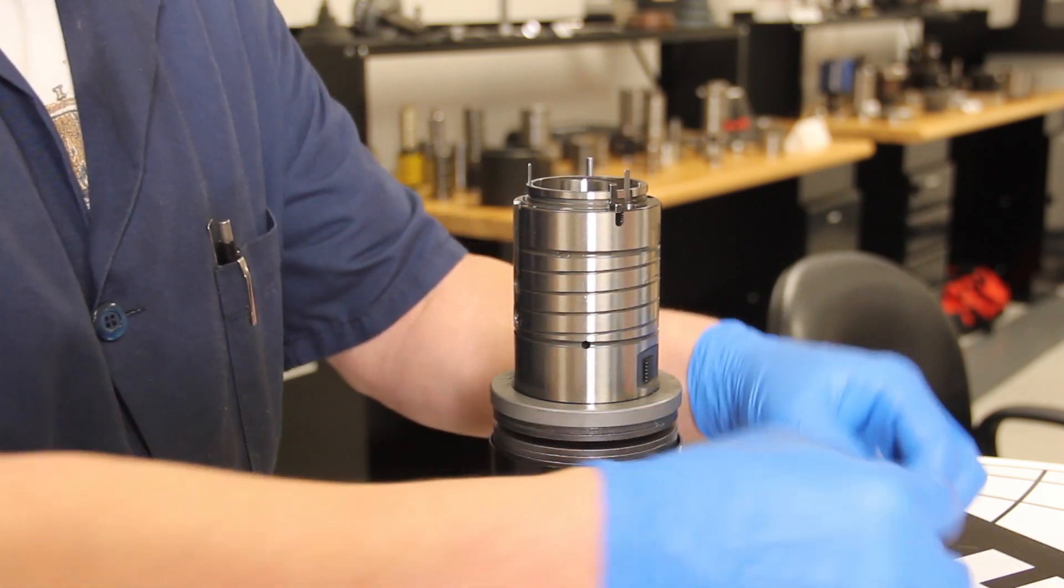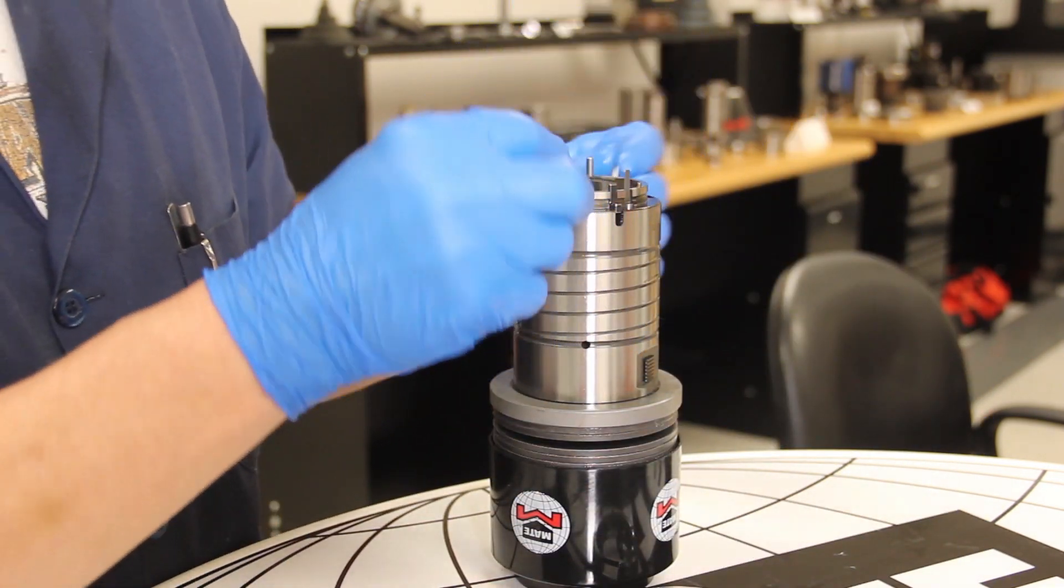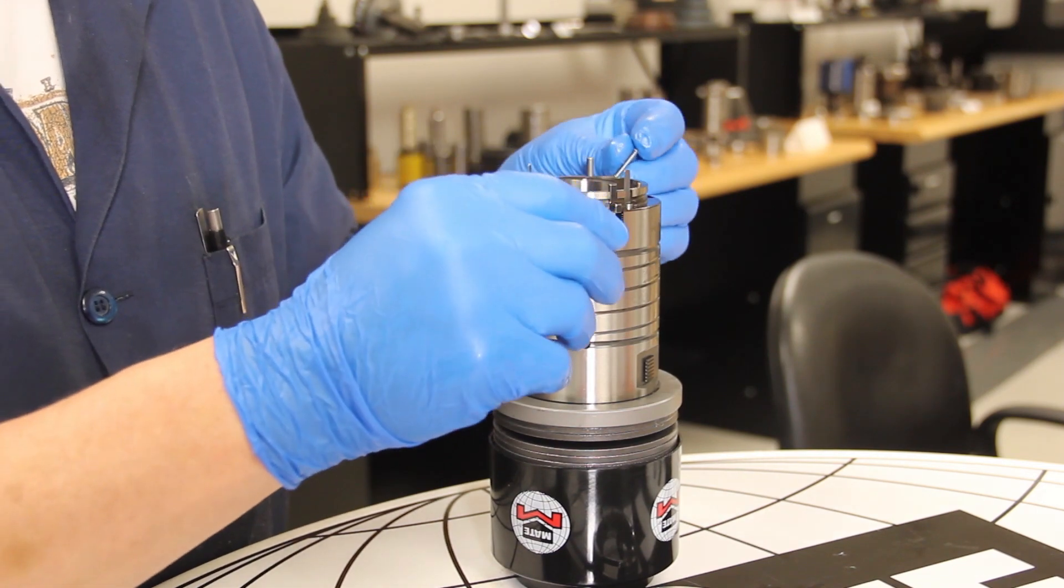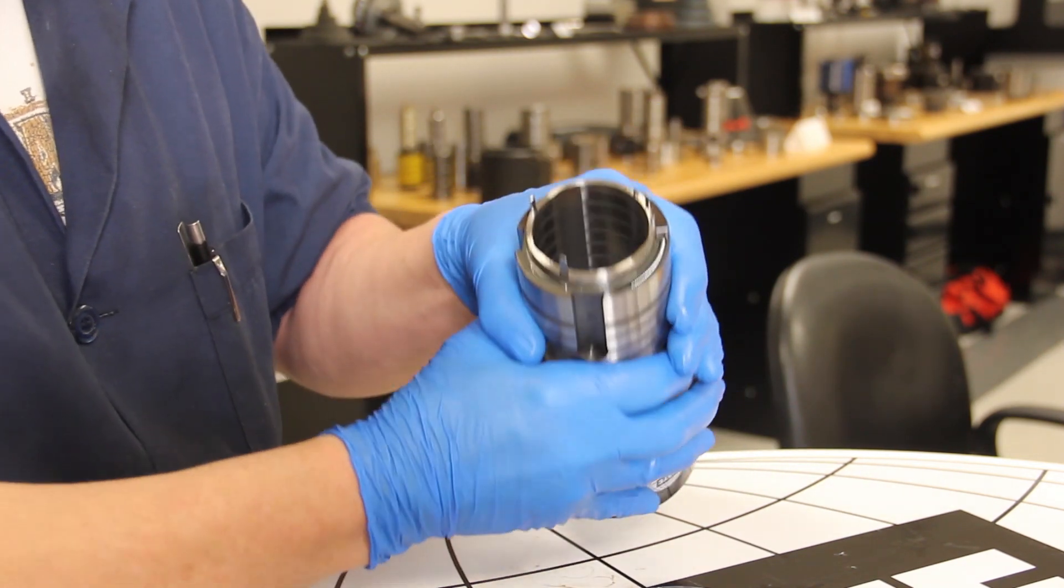Next, install our springs into the relief pocket grooves. Our C-Station will have two springs. Our D- or E-Station will have three springs in these groove pockets.